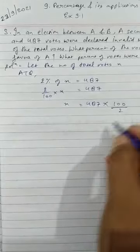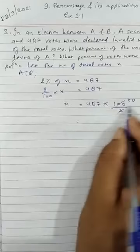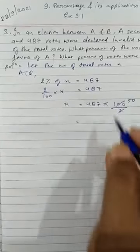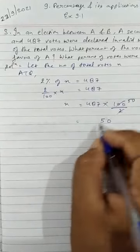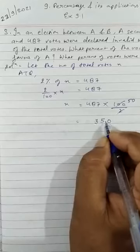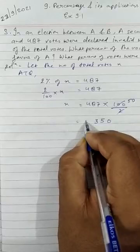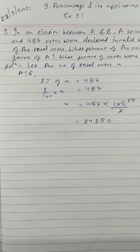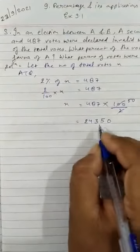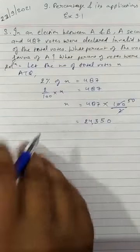100 divided by 2 is 50. Now multiplying these two numbers we get 24,350. So 24,350 were the total number of votes.